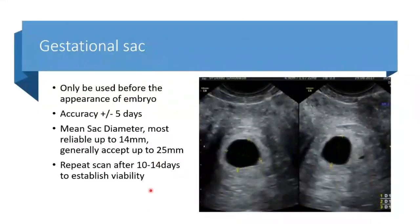Apart from crown-rump length and BPD/femur length, you can measure the gestational sac — but only before you can see the embryo. For dating purposes, accuracy is around plus or minus five days. We do it as a mean sac diameter, taking three dimensions: AP, height, and transverse. It is reliable up to 14 mm, though generally we accept up to 25 mm. Repeat the scan after 10 to 14 days to establish whether there is a viable pregnancy.